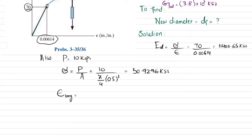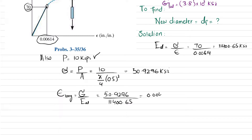Now we find the longitudinal strain. Due to load P, the longitudinal strain equals stress divided by modulus of elasticity: ε_long = 50.9296 / 11,400.65 = 0.0044673 inch per inch (dimensionless).